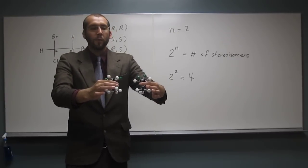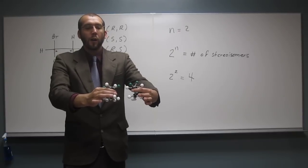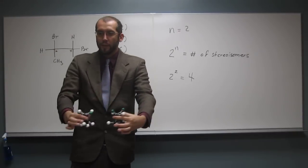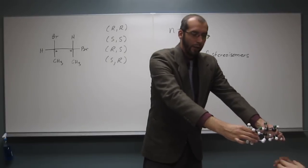One of them's R,R, and the other one's S,S, okay? Does everybody see the two enantiomers? Here, you can pass them around if you want to. And here, right, everybody sees probably the two enantiomers, right?